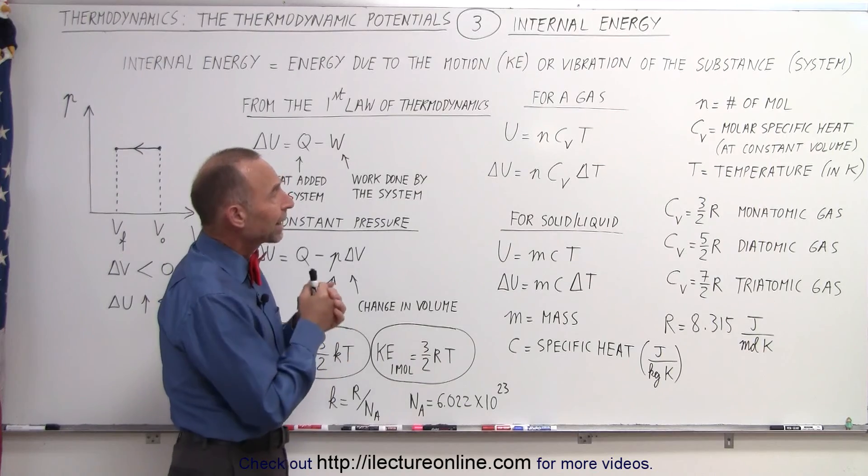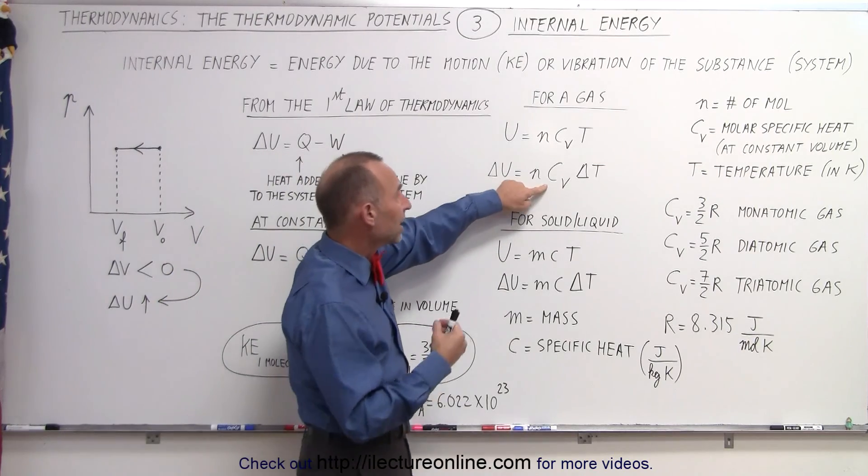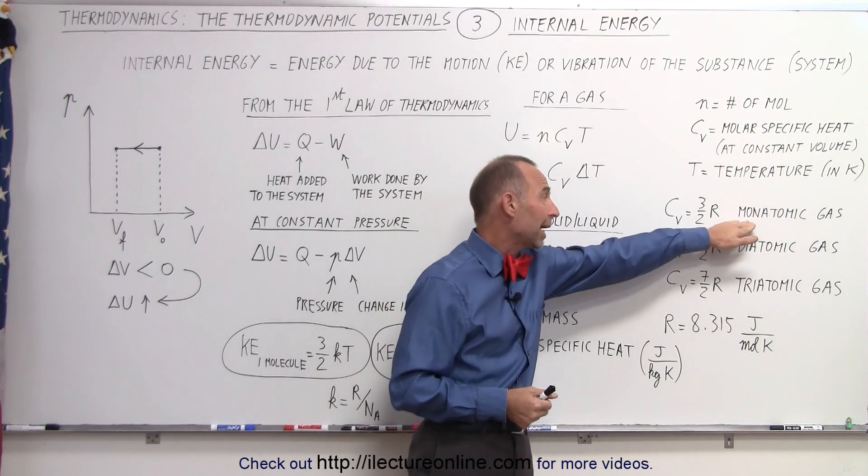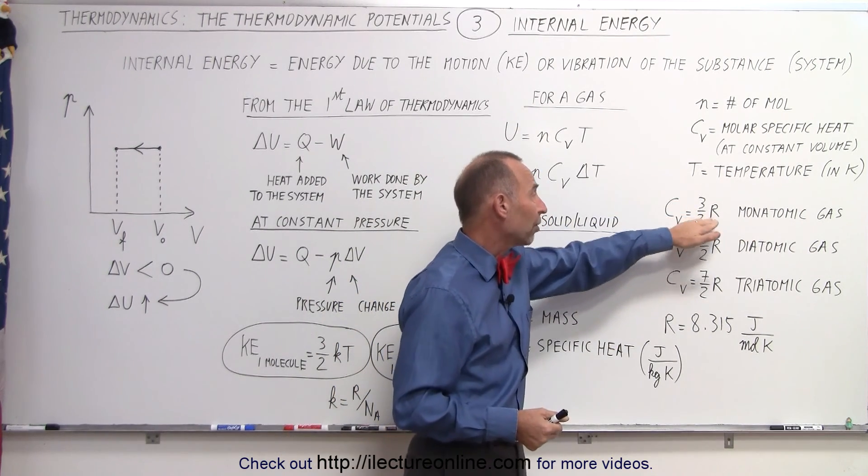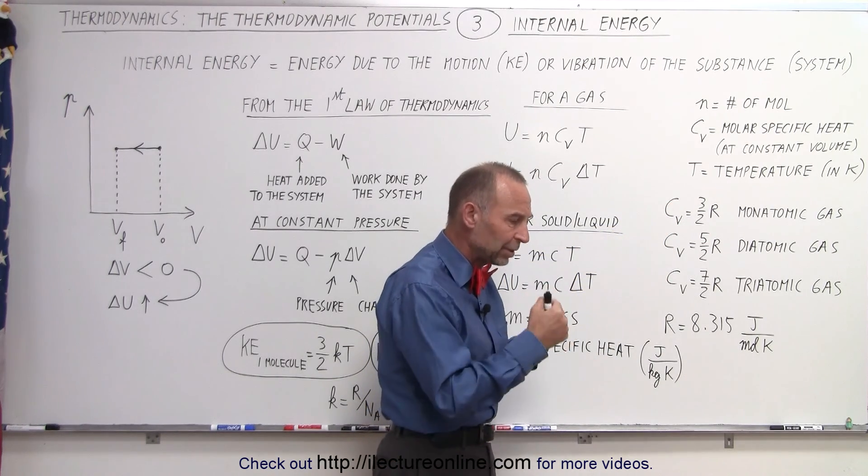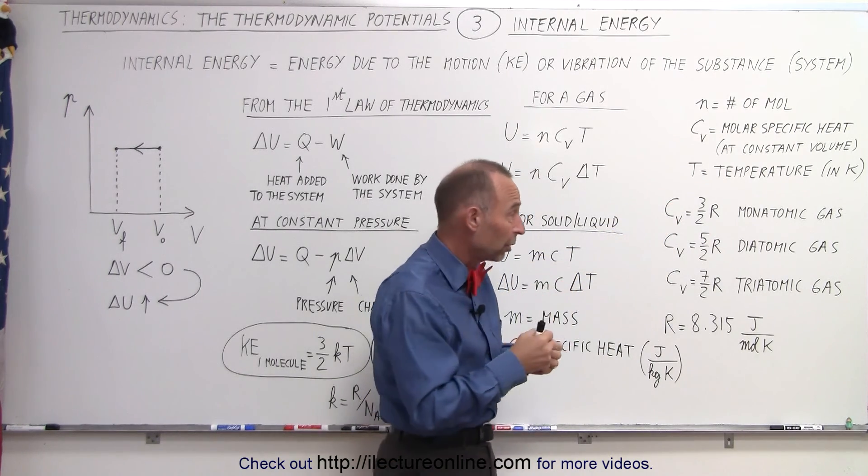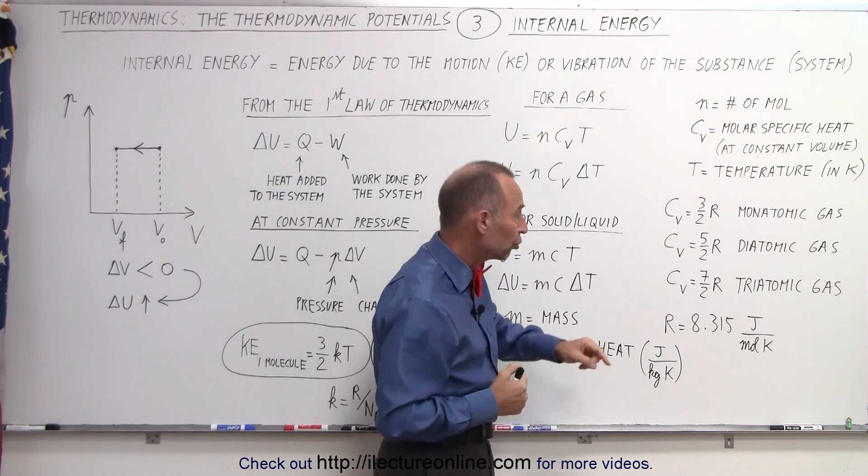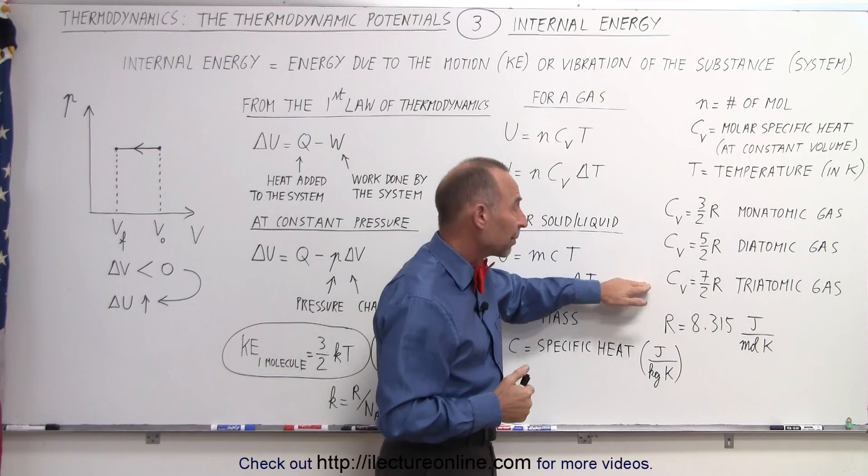Now, notice for a gas, C sub V can take on different values depending upon what type of gas we're dealing with. If we're dealing with a monatomic gas, C sub V is three halves R, which has to do with the motion of the gas molecules. For a monatomic gas, you can only have translational motion. For a diatomic and triatomic gas,